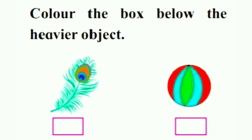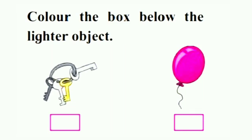Let us now solve some examples from the textbook. The question says: color the box below the heavier object. We are given the image of a feather and a ball. The feather is light in weight whereas the ball is heavy, so we will color the box which is below the ball.